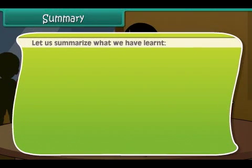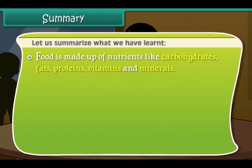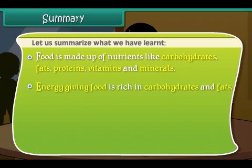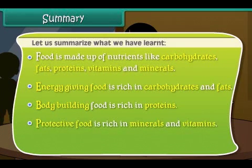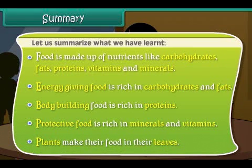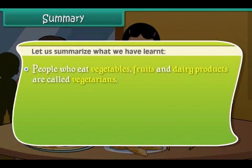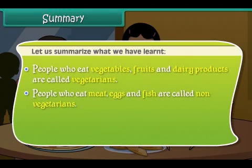Summary: Food is made up of nutrients like carbohydrates, fats, proteins, vitamins and minerals. Energy giving food is rich in carbohydrates and fats. Body building food is rich in proteins. Protective food is rich in minerals and vitamins. Plants make their food in their leaves. People who eat vegetables, fruits and dairy products are called vegetarians. People who eat meat, eggs and fish are called non-vegetarians. We should follow good food habits to stay fit and healthy.